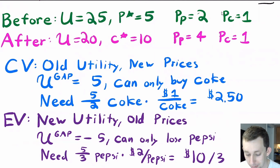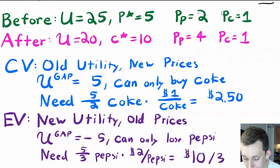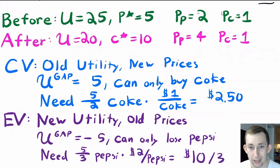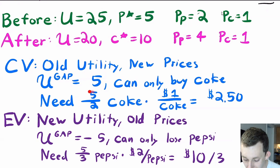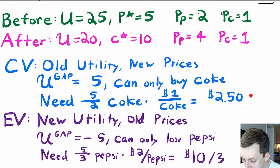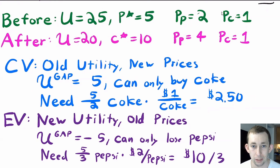For compensating variation, we want to get back to the old utility of 25 at the new prices. The gap between before and after utilities is 5. At the new prices we're only buying Coke, so we figure out how much Coke we'd need. We need 5 units of utility, each Coke gives marginal utility of 2, so we need 5/2 Cokes at $1 each — that's $2.50. The compensating variation is $2.50.